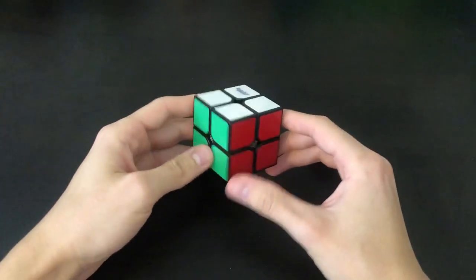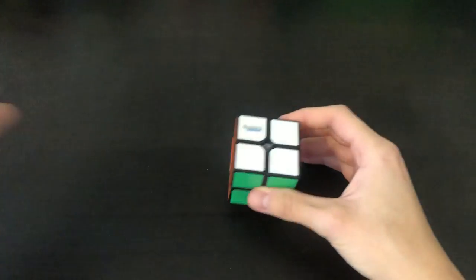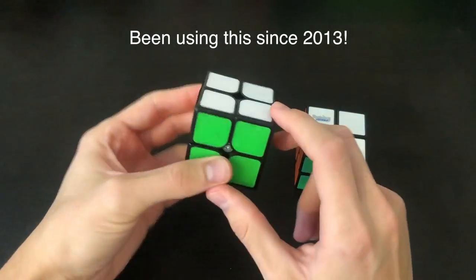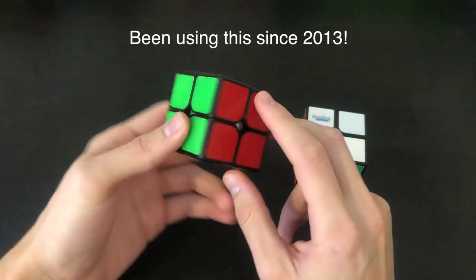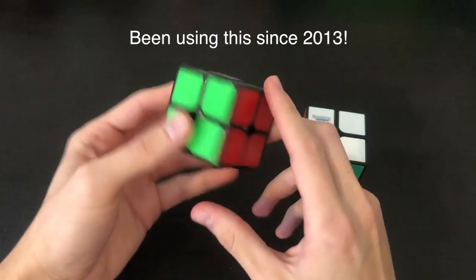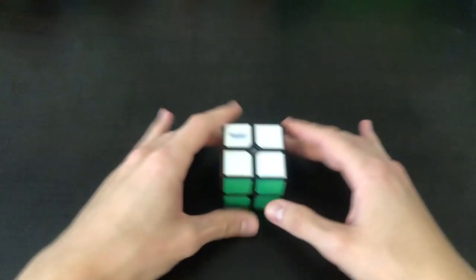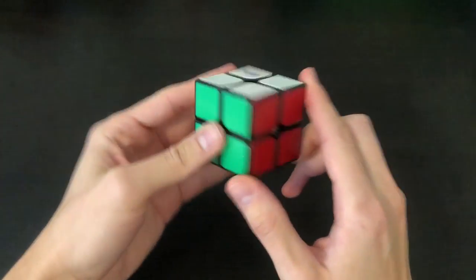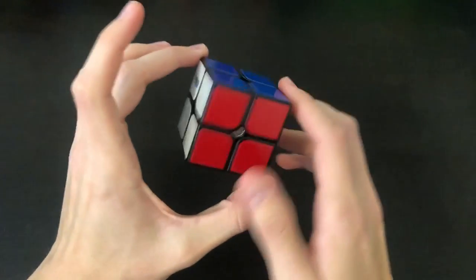So a lot of people on this channel probably know that my main 2x2 is this Fang Shi 2x2. I'm not exactly sure on the name of it. I believe the brand is Fang Shi. It's tiled. It's from a couple years ago. I haven't really been up to date with all the new 2x2s in the past few years. But this I'm very excited to take a look at.